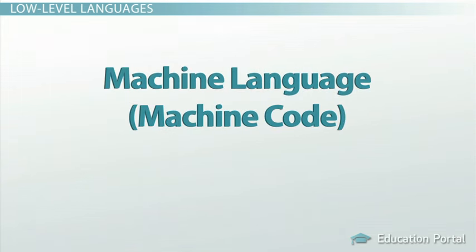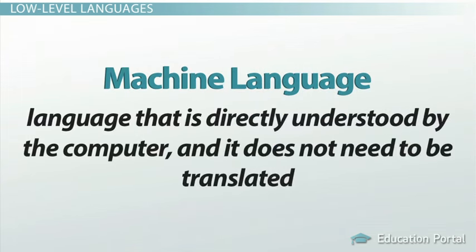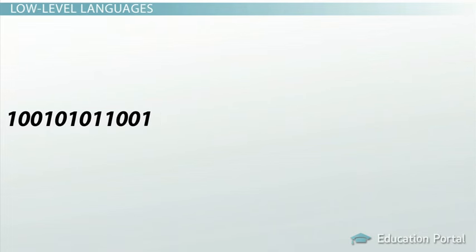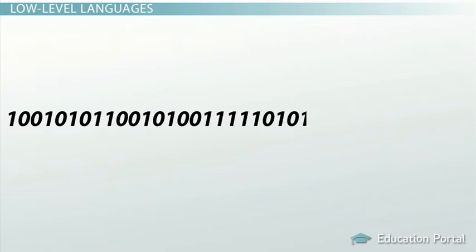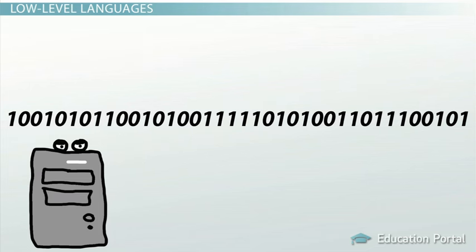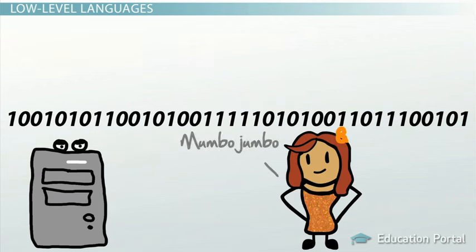Machine language, or machine code, is the only language that is directly understood by the computer and it does not need to be translated. All instructions use binary notation and are written as a string of ones and zeros. A program instruction in machine language may look something like this. Technically speaking, this is the only language computer hardware understands. However, binary notation is very difficult for humans to understand.